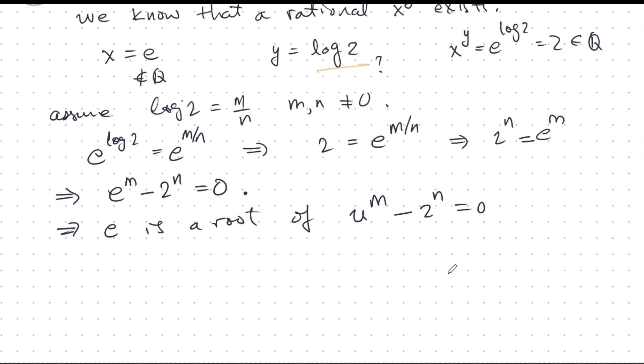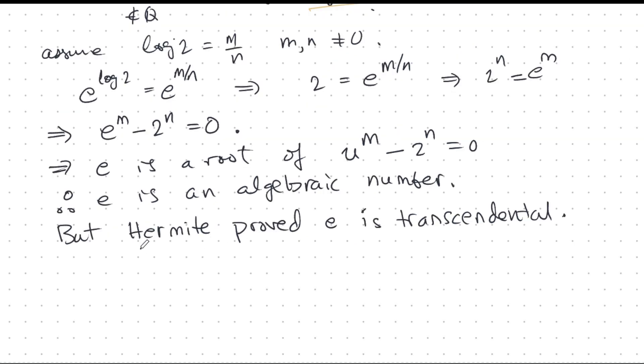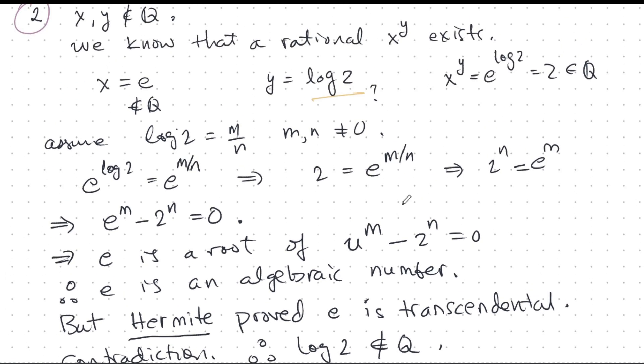However, Hermite proved that e is transcendental. So this is a contradiction. And therefore, log 2 is irrational. And we've got our construction. We have an example here of two irrational numbers, e and log 2.